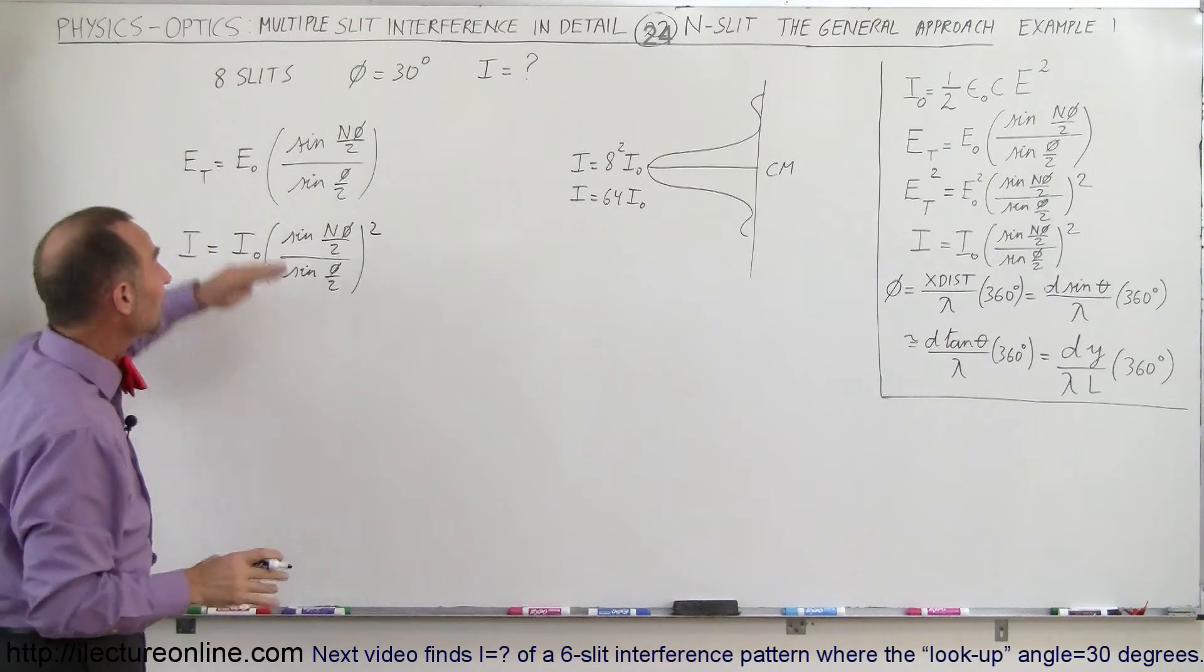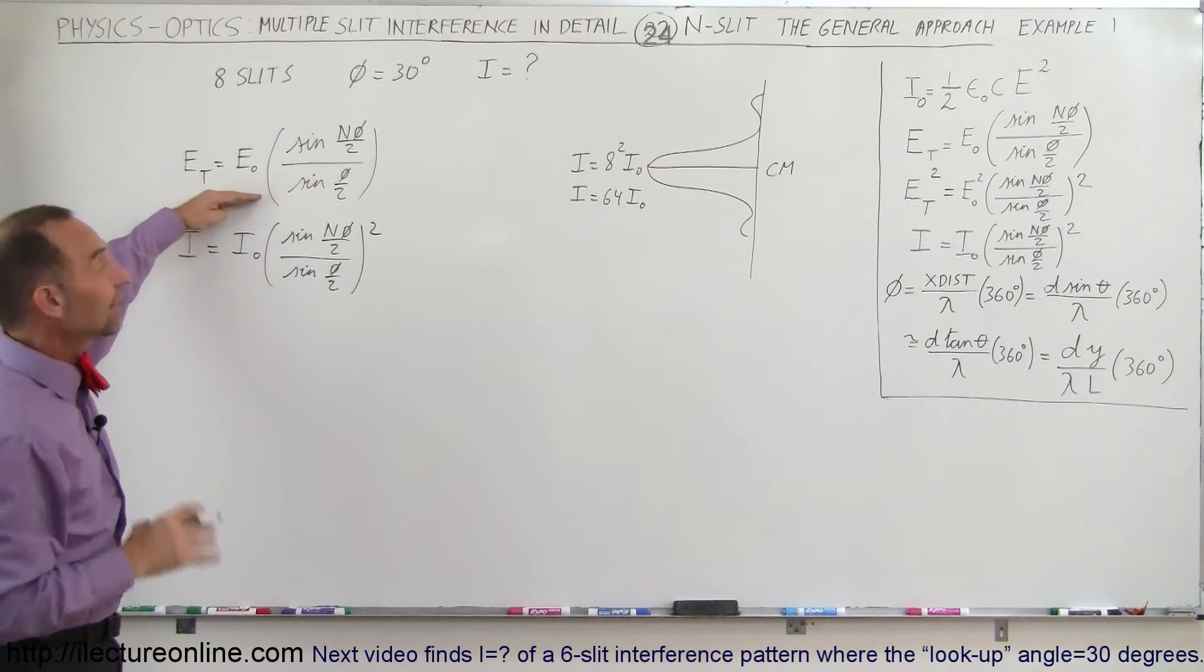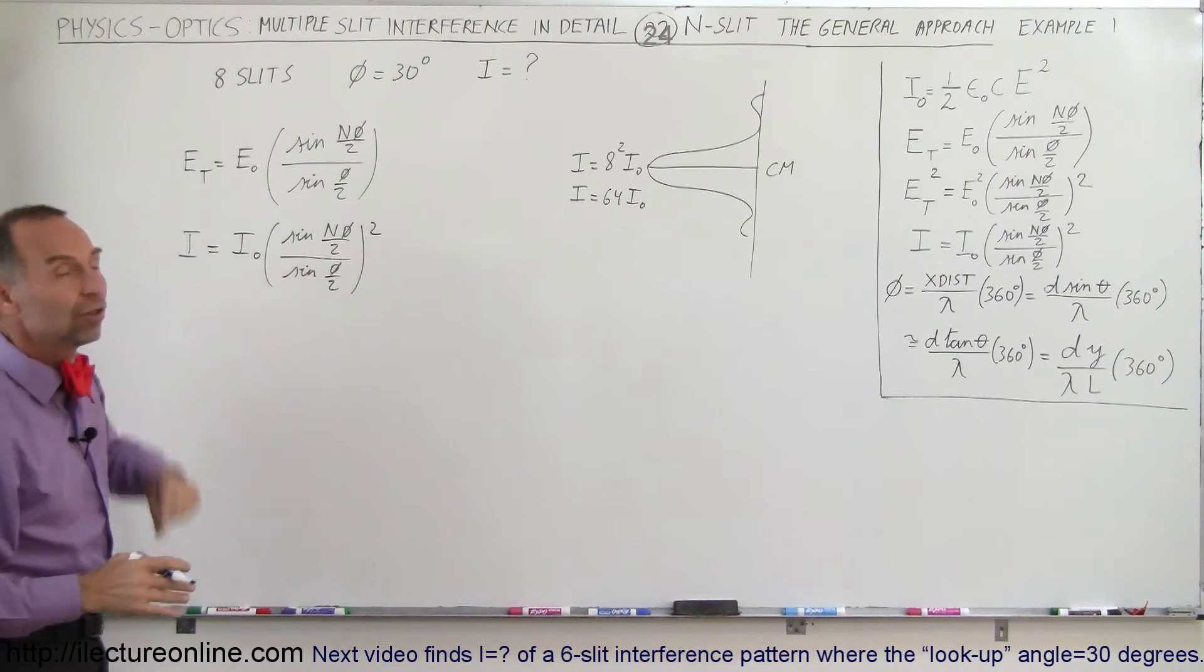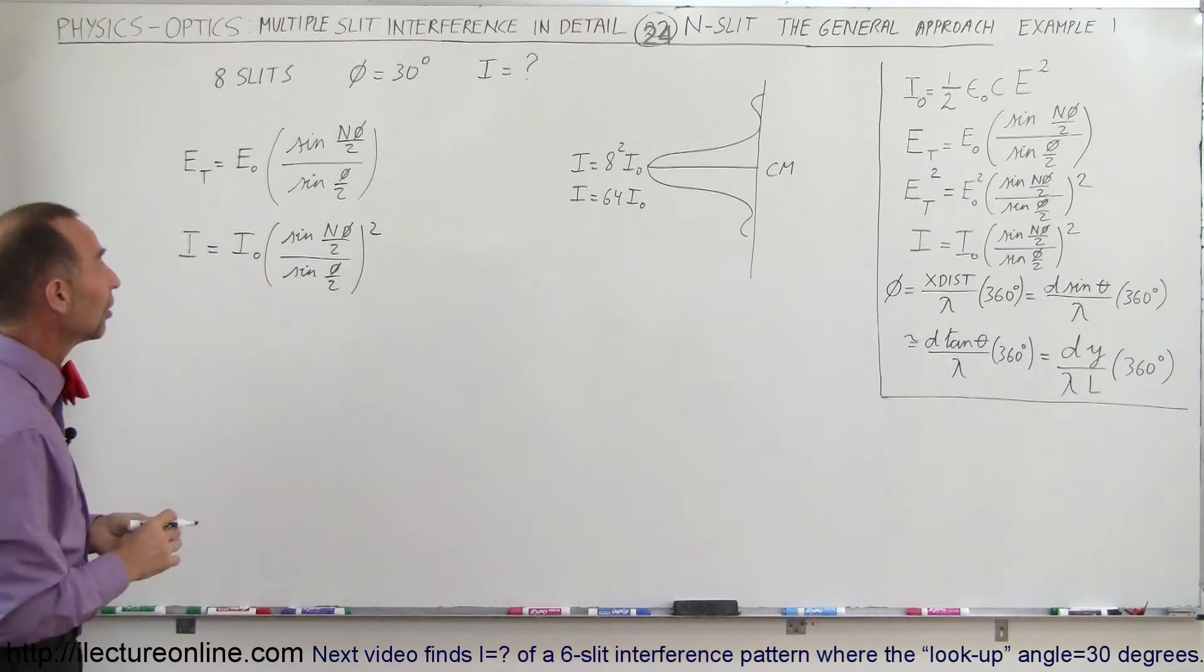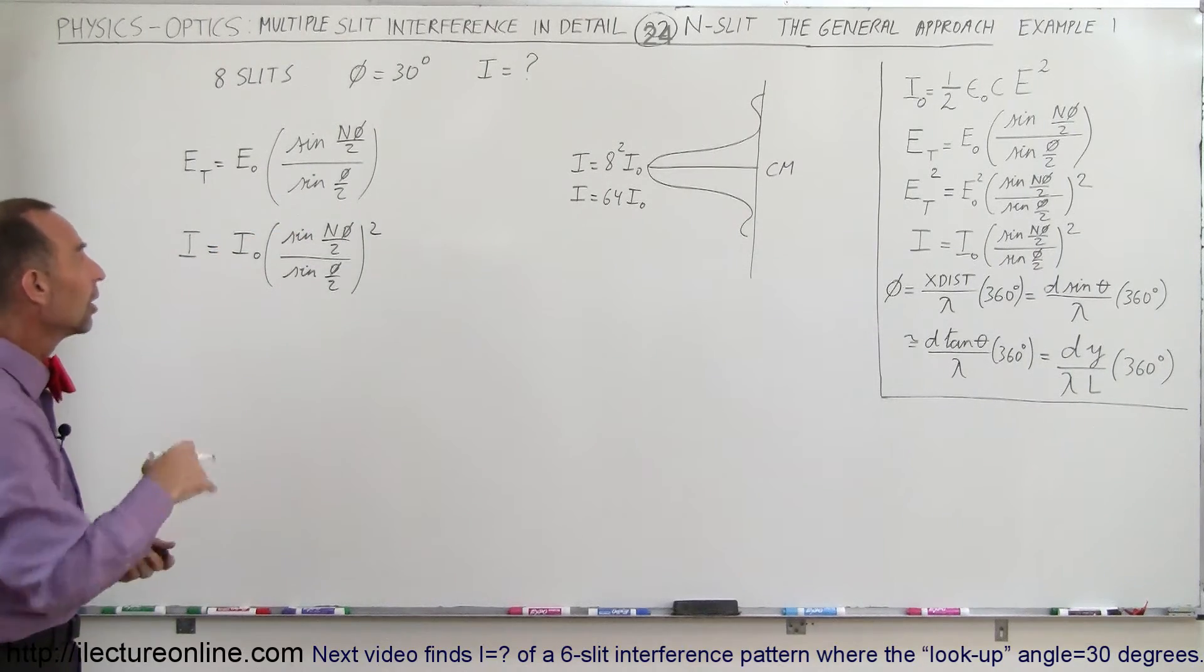So actually we don't even need to find what the electric field intensity is. We can directly jump to this equation by using this general equation for n number of slits. So let's plug in the numbers and see what we get.